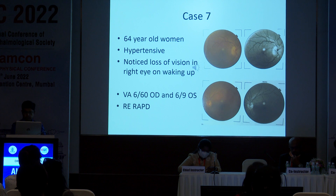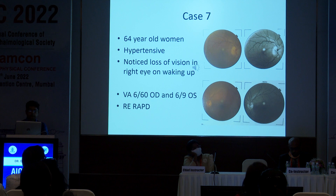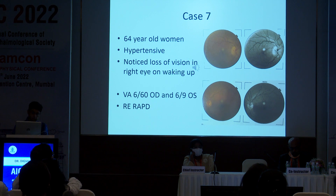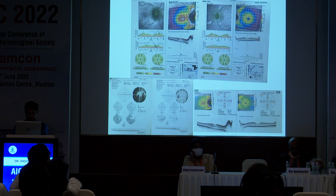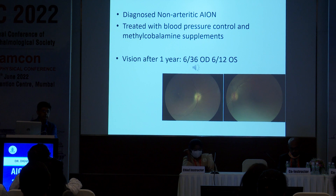This is the fundus image of an elderly hypertensive female who noticed vision loss on waking up in the right eye. There is a right eye RAPD. You can see there is a segmental disc edema in the right eye, and the left disc is showing a very small cup-to-disc ratio — this is highly suggestive of NAION. The OCT images and fields show disc edema and a highly constricted visual field. Management of NAION involves control of systemic factors, which is blood pressure in this case, and over time there is some improvement in visual acuity.